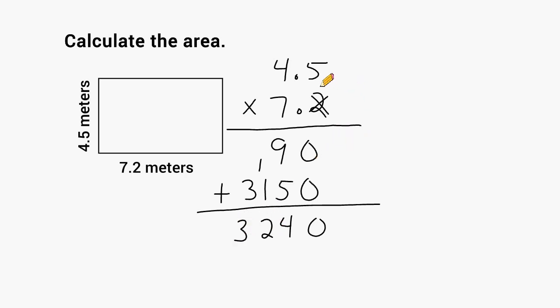Now, in the problem, we have a place value located after this decimal and a place value located at this decimal. What you do is you have to take all of the place values after all of your decimals and add that together.